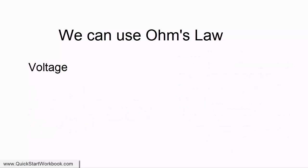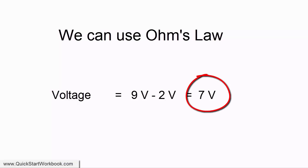If we assume a voltage drop of about 2 volts which is fairly typical for an LED, then this gives us a voltage value of 7 volts which is what we're using in Ohm's law.